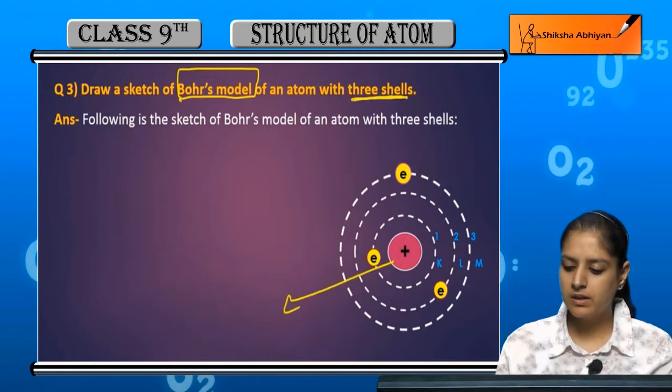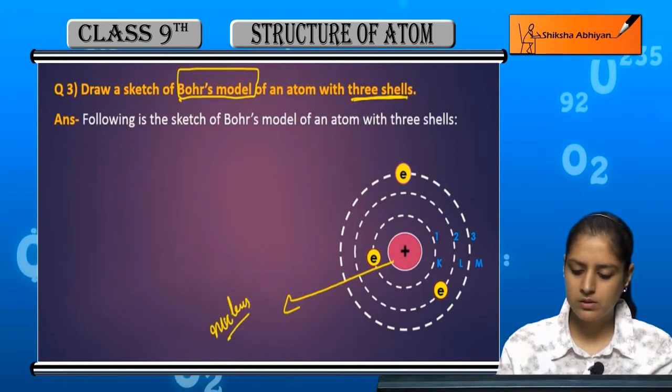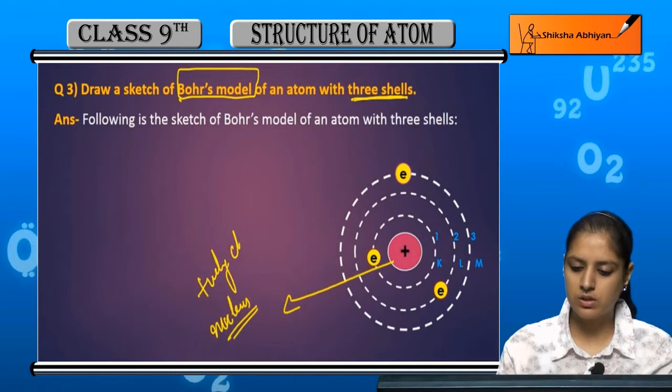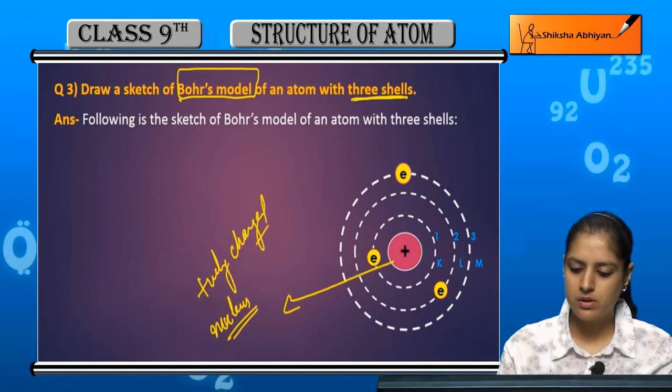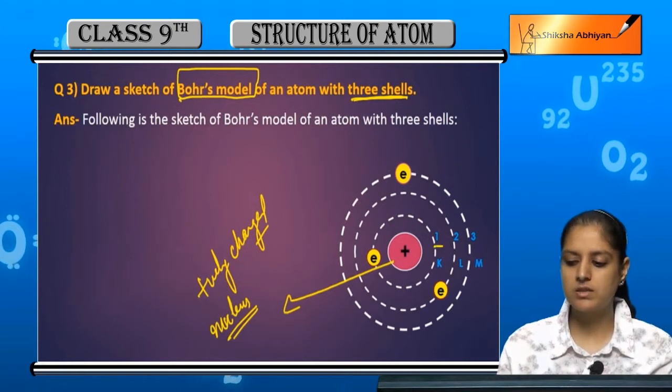Bohr's model, center mein atom ka nucleus hota hai, okay, jo ki positively charged hota hai. So center mein positively charged nucleus banaya, uske baad humne teen shells banai - one, two, three.